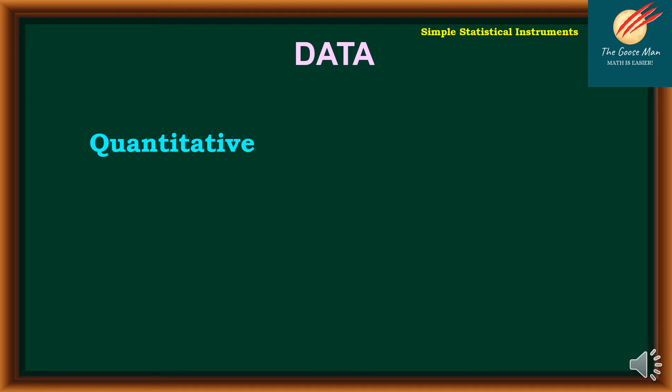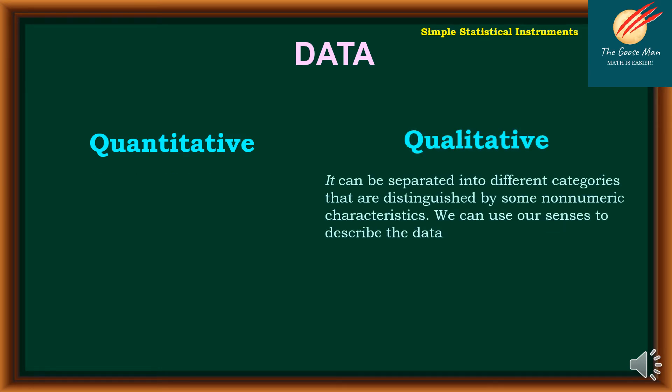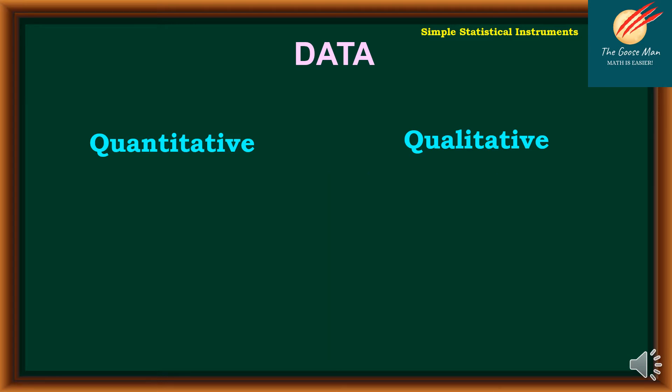There are two types of data. The first one is the quantitative data. It consists of numbers representing counts or measurements. It is measurable. On the other hand, we have qualitative data. It can be separated into different categories that are distinguished by some non-numeric characteristics. We can use our senses to describe the data.